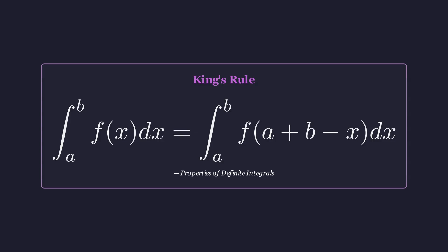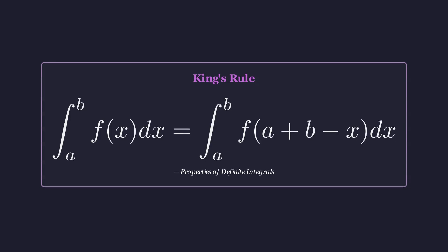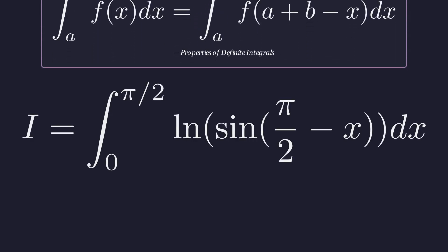Here a is 0 and b is pi over 2, so a plus b minus x becomes pi over 2 minus x. Applying the rule, we replace x with pi over 2 minus x inside the sine function.